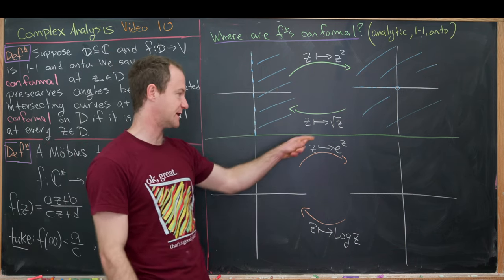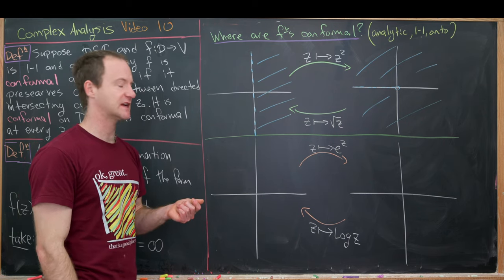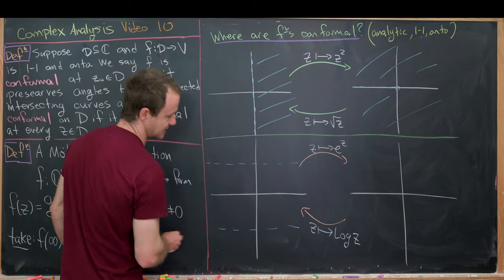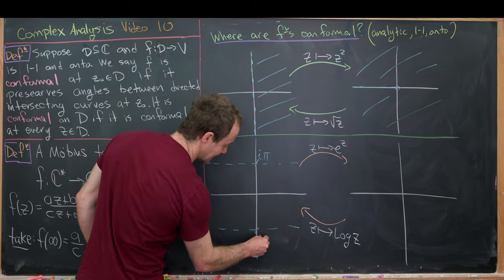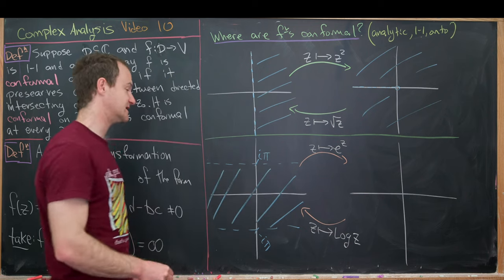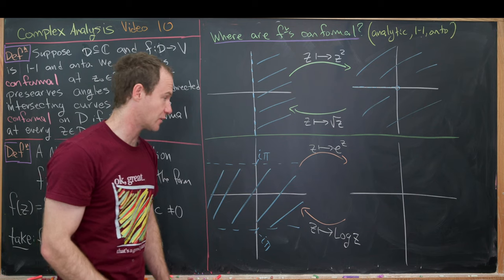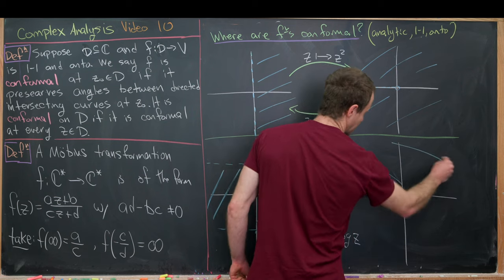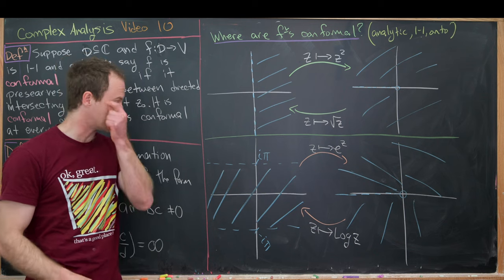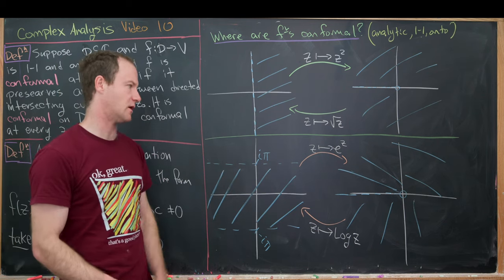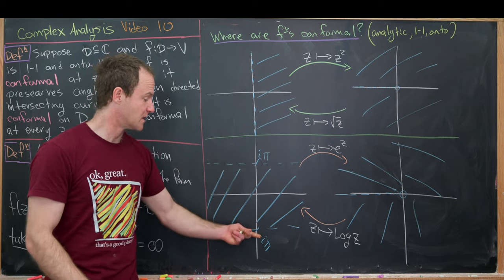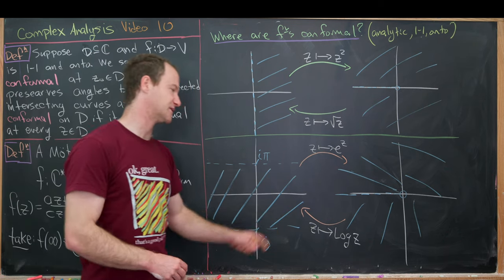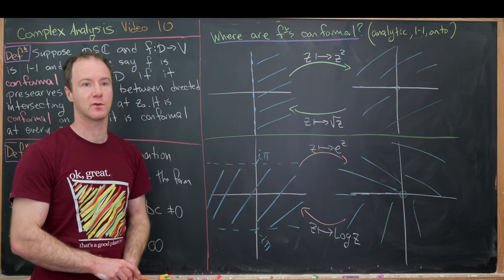For the exponential function, which is 2πi-periodic, we look at the horizontal strip from −iπ to iπ. In this strip, eᶻ is one-to-one, and it maps to everything except the negative real axis. The boundary lines at ±iπ map to −1, which is excluded. This gives us the picture for both the exponential function and the principal branch of the logarithm — those are the regions on which these functions are conformal.